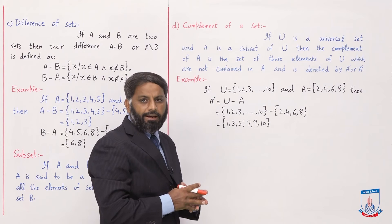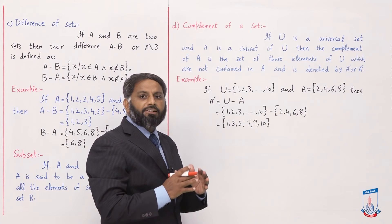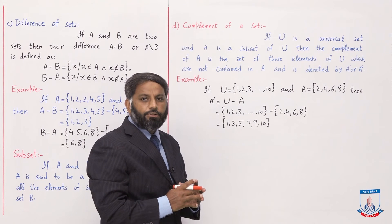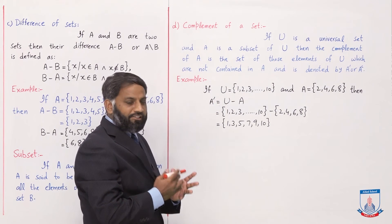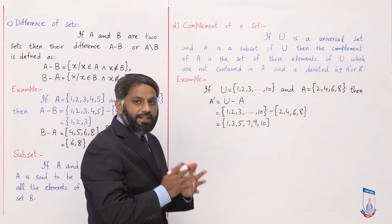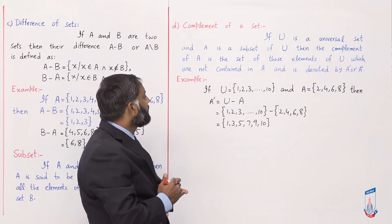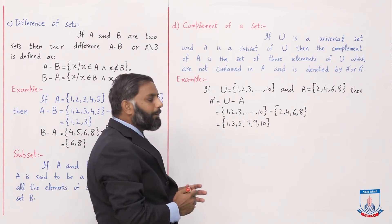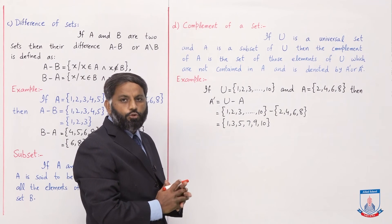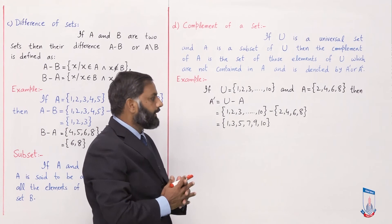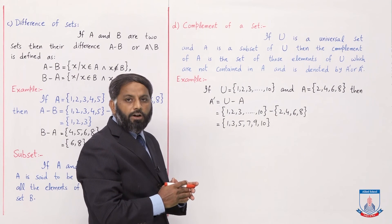Sets under consideration تمام کے تمام universal set کا subset کہلاتے ہیں۔ اس definition میں یہی لکھا ہے کہ A کے تمام elements U میں موجود ہوں گے۔ Complement of A میں وہ elements آئیں گے — those elements of U which are not in A۔ جیسے difference of two sets — same طریقے سے A' = U − A ہوتا ہے۔